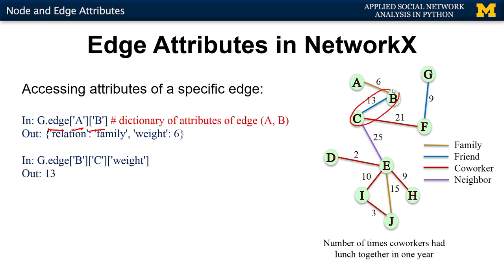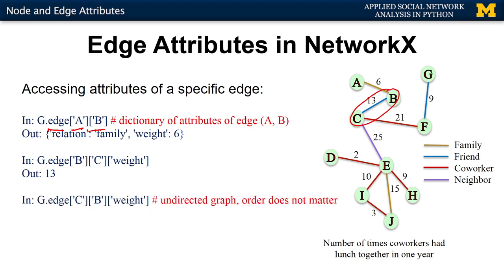For example, if you wanted to know the weight of edge b-c, you would do it this way and it will tell you it's 13, as shown here. Notice that because this graph is undirected, the order in which we place the endpoints does not matter. So asking for the weight of edge b-c or edge c-b gives the same result — 13.